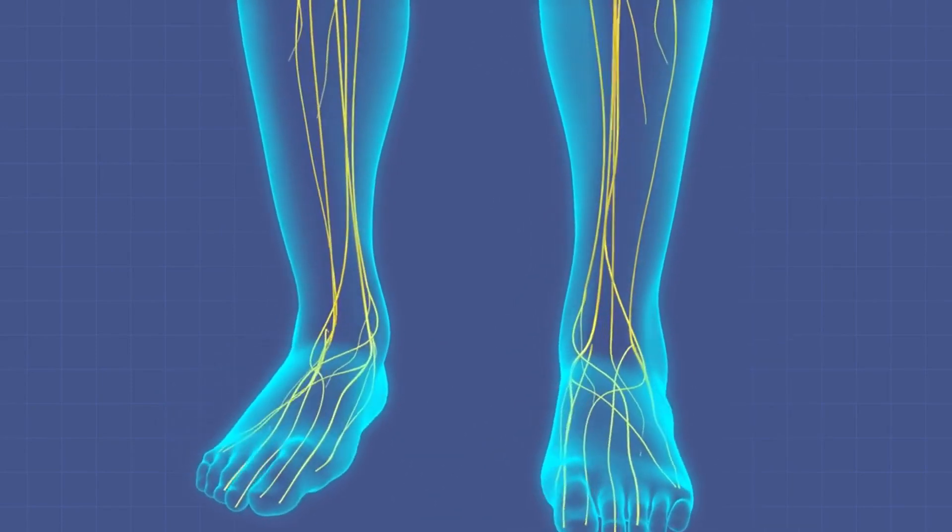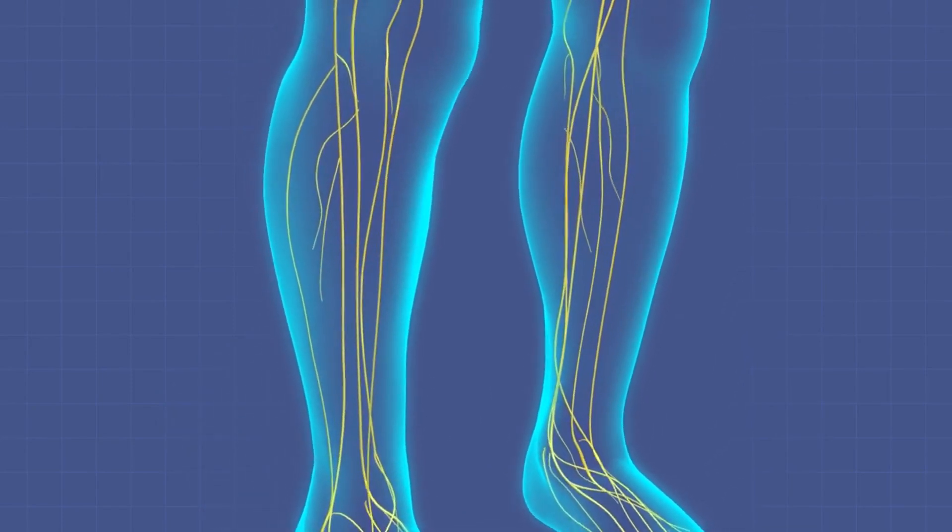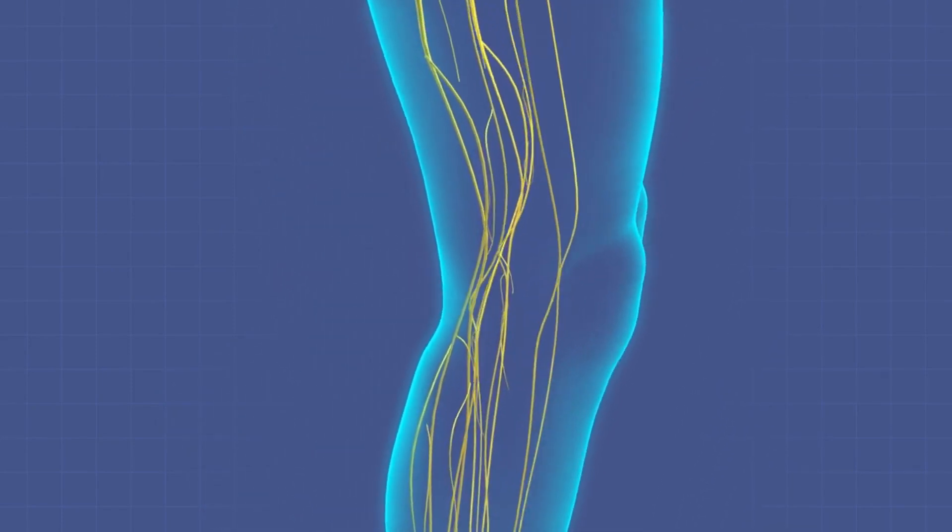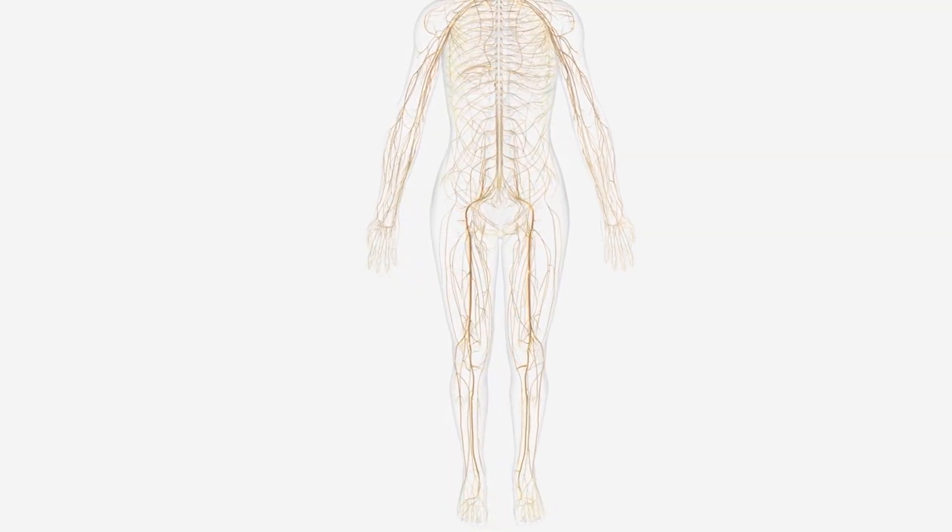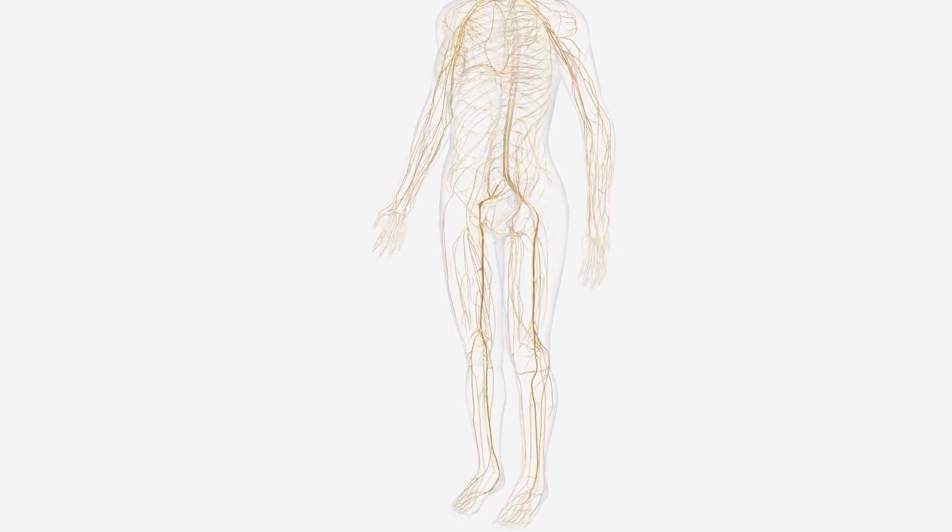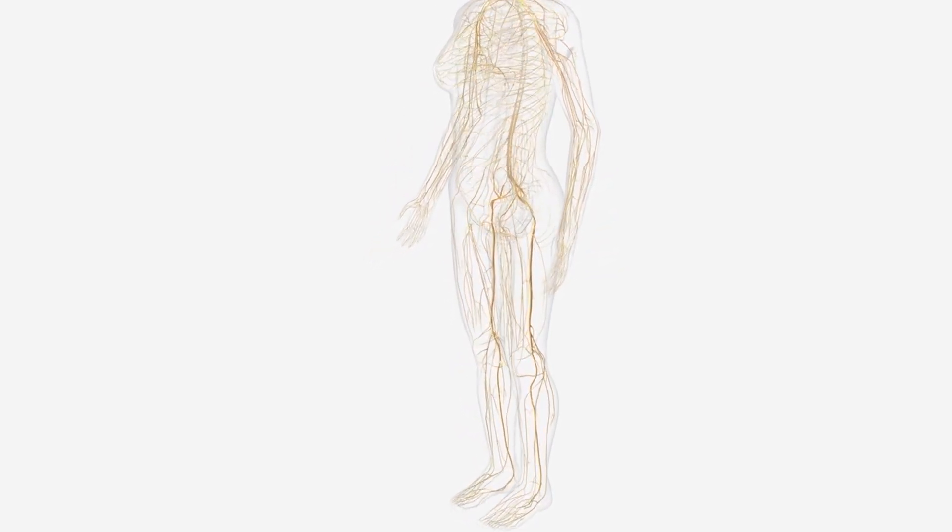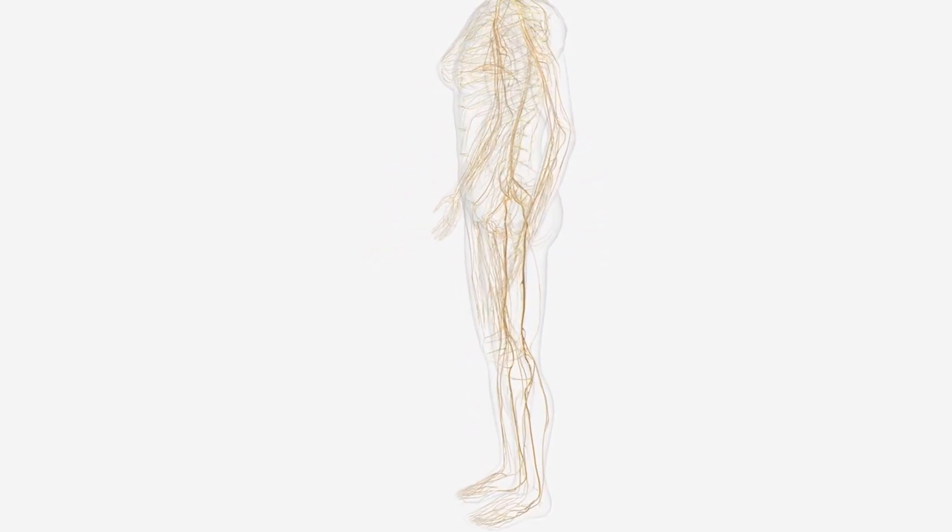The somatic nervous system allows us to perform activities like walking, picking up objects, and talking. It consists of sensory nerves that carry information from the senses to the central nervous system, and motor nerves that transmit commands from the central nervous system to the muscles.